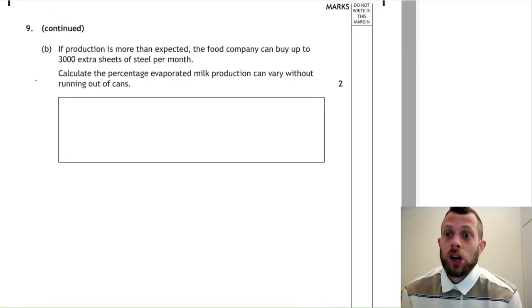So this question keeps on going. Part B, if the production is more than expected, they can buy 3000 extra sheets of steel. So that means they can make more cans. So how much, by what percentage could milk production increase by? Obviously if the milk production decreases, they have enough cans. But if it increases, then how much could it increase by?